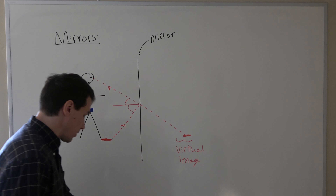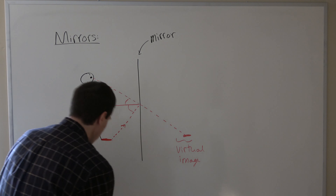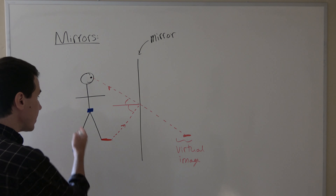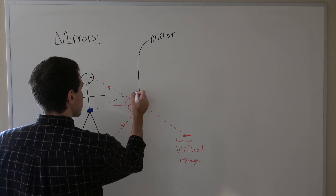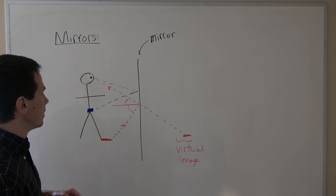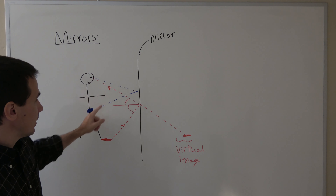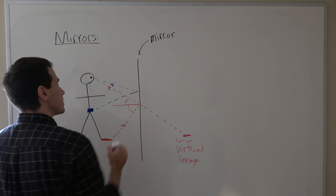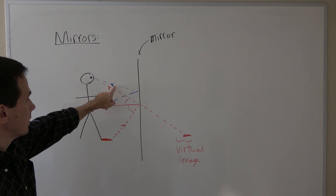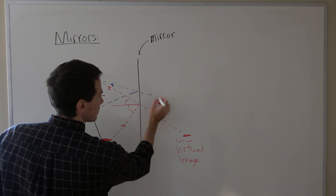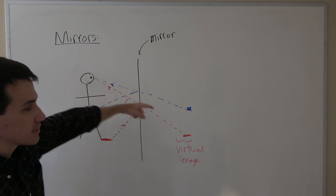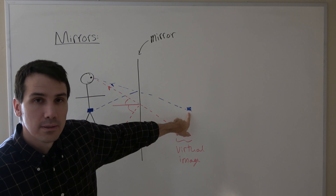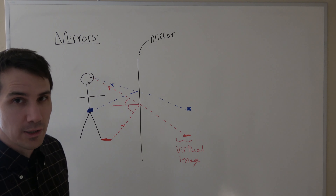Let's try the same thing with the belt buckle. If I want light to leave from your blue belt buckle and hit your eye, it needs to follow a path that looks something like this. Again the reflected angle is the same as the incidence angle, and now your eye sees blue light coming in from this angle and believes that light came along a straight line — which means your eye believes the belt buckle is over here on the other side of the mirror. Again, this is a virtual image of your belt buckle.